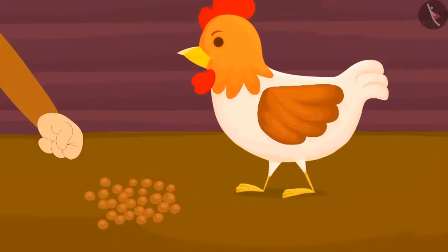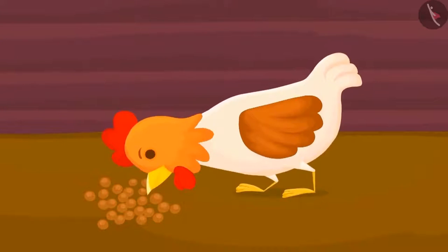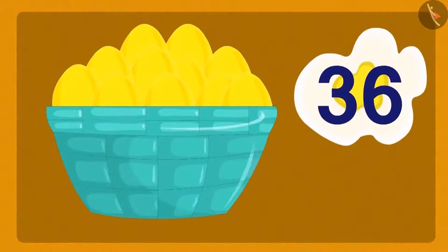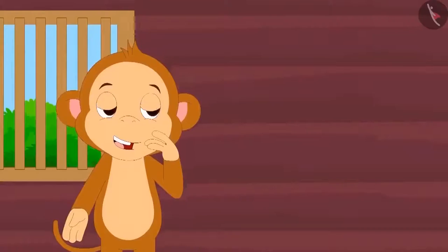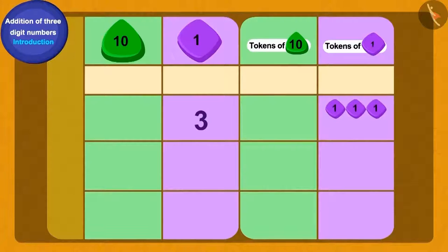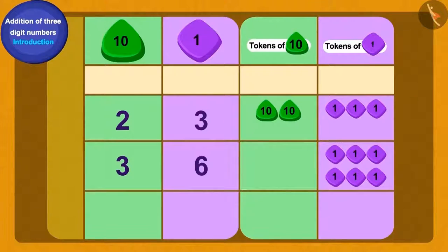Baban fed the hen daily for a week and in a week, the hen laid another 36 eggs. Baban is thinking, how many gold eggs he has now? Let us help him. To find the total number of gold eggs, we will add 36 to 23.